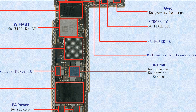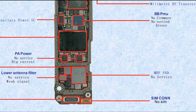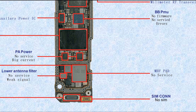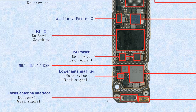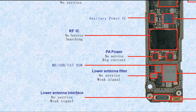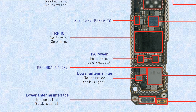This one is the BBPMU — baseband power management unit. If broken, it causes no firmware, no service, or errors. This one is the MHF PAD — medium high band frequency power amplifier. If broken, it causes no service. This one is the SIM connector — if broken, it causes SIM reading problems. This one is the low antenna interface connector — if broken, it causes no service or weak signal. This low antenna filter — if broken, it causes no service or weak signal.